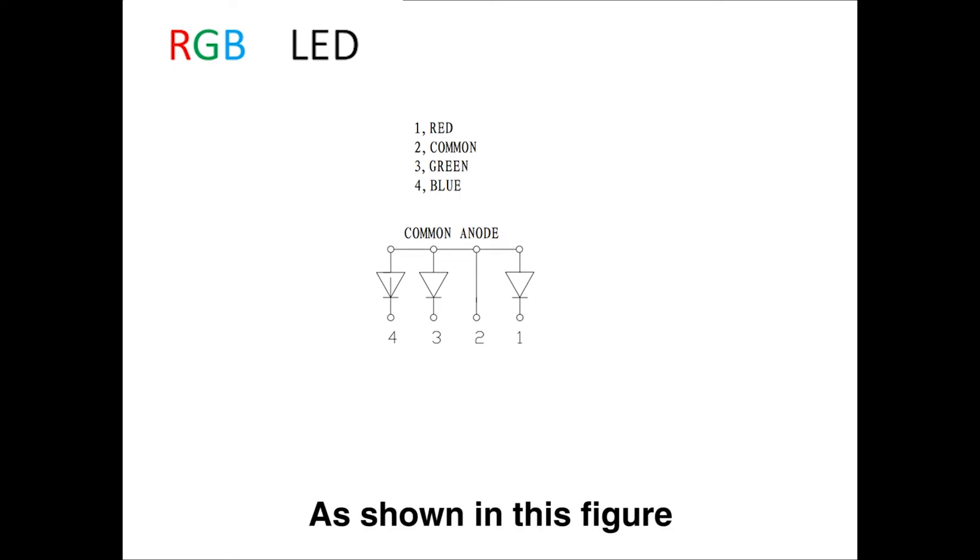As shown in this figure, this is the common anode RGB LED. The anodes of the LEDs of 3 colors are connected together, and the cathodes are taken out separately. According to the principle of trichromatic, the Arduino controls the brightness of each LED through these lead-out pins to mix almost any color you want.